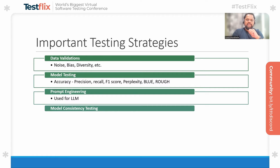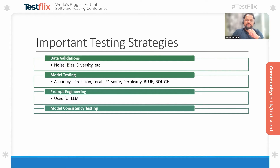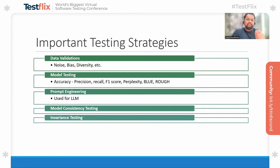Another interesting testing strategy is model consistency testing. Given the dynamic nature of generative AI applications, it becomes very important to monitor and perform model consistency testing to understand whether the output is consistent or not. Similarly, invariance testing is also a very important testing strategy, where we try to see whether the output of the model is consistent or the same while we are changing the input.